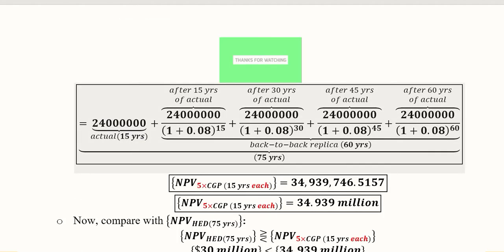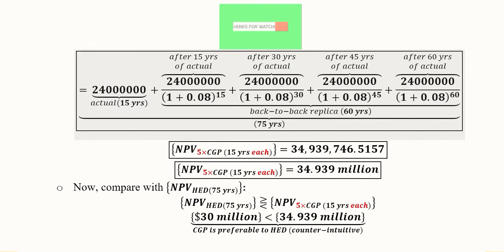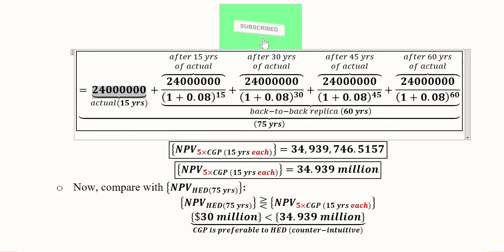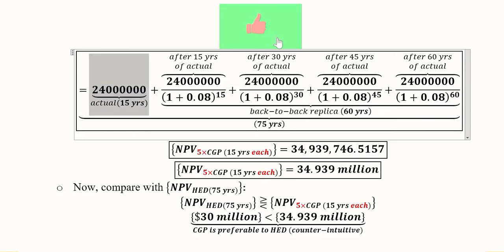For the calculation, we take the original NPV and then discount it at the given discount rate for each replica. Each replica's NPV is discounted using its respective start time — 15 years for the first replica — because that NPV is already calculated based on discounting from the beginning of its own 15-year period.